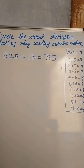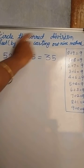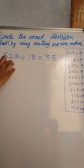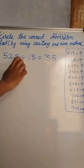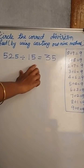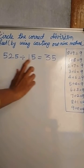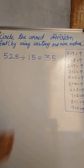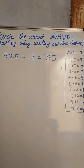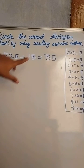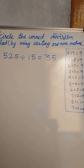Circle the correct division factor using the casting out nines method. The question is 525 divided by 15 is equal to 35. To prove this is the correct answer, there is a shortcut method called casting out nines.